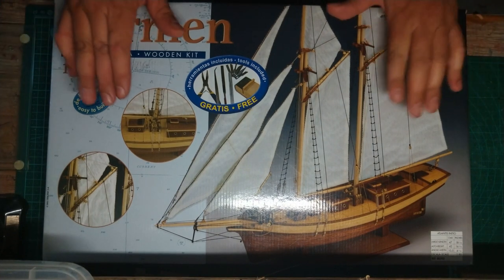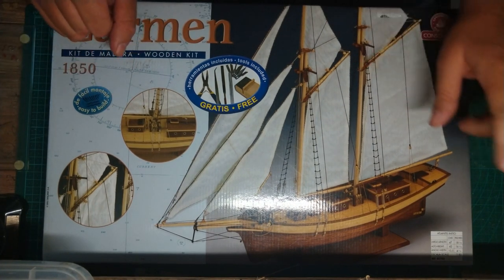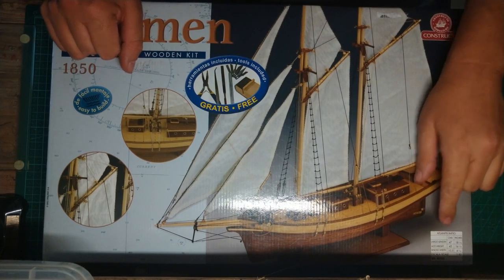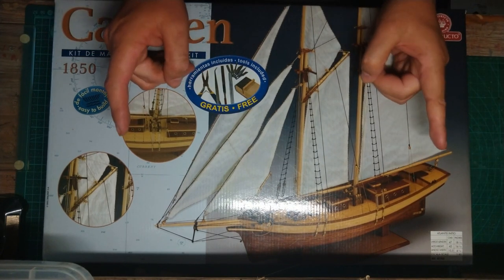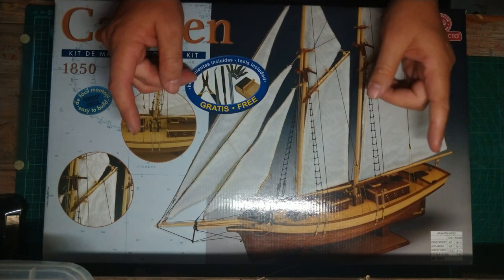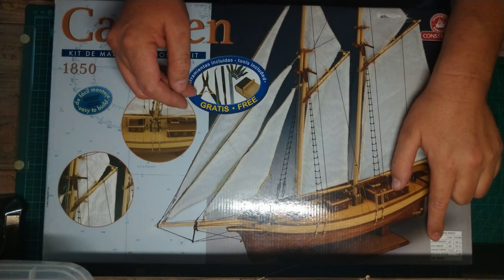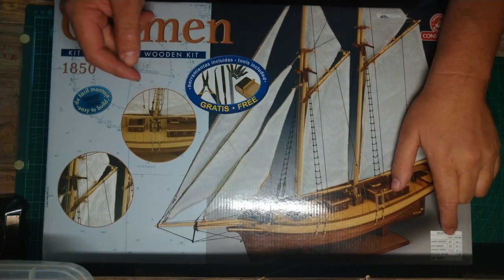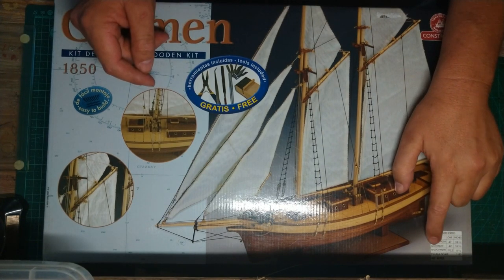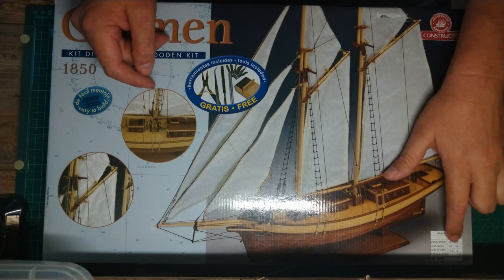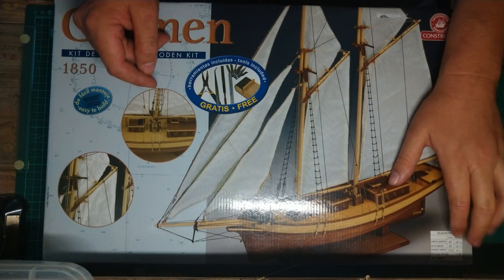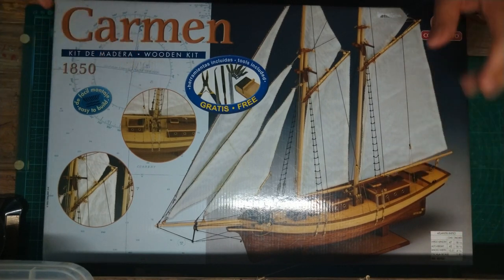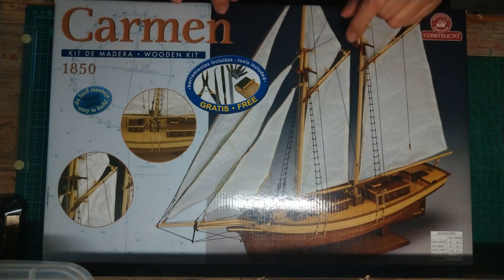The length of this boat will be about 47 centimeters, about 18 and a half inches. The height is about 24 centimeters, 42 centimeters, about 16 and a half inches. The width is about 10 and a half centimeters, four and a half inches. And then the scale is 1 in 80.